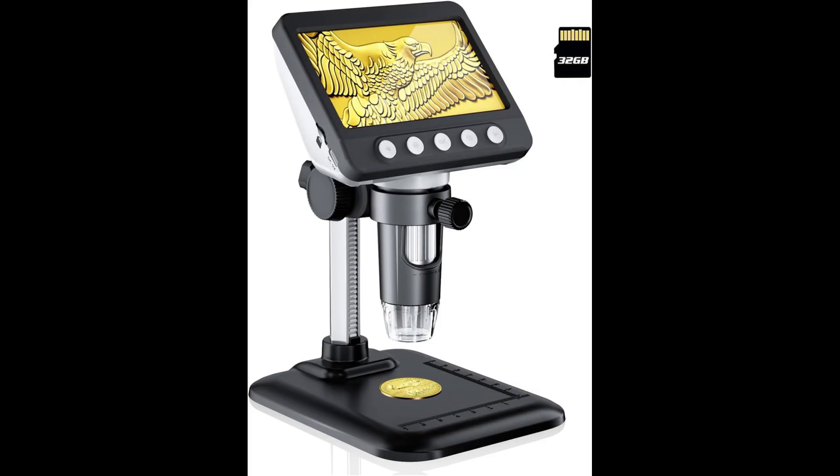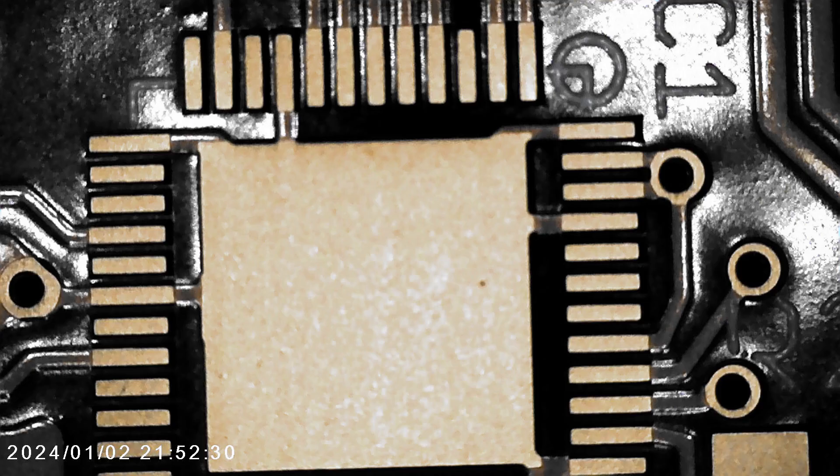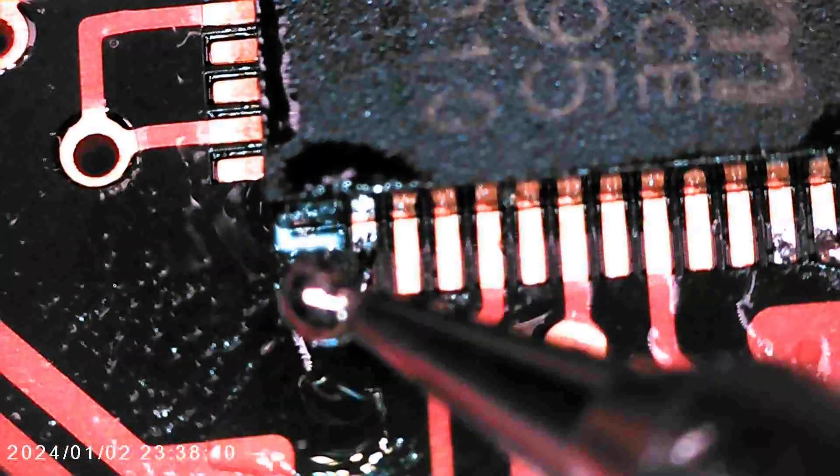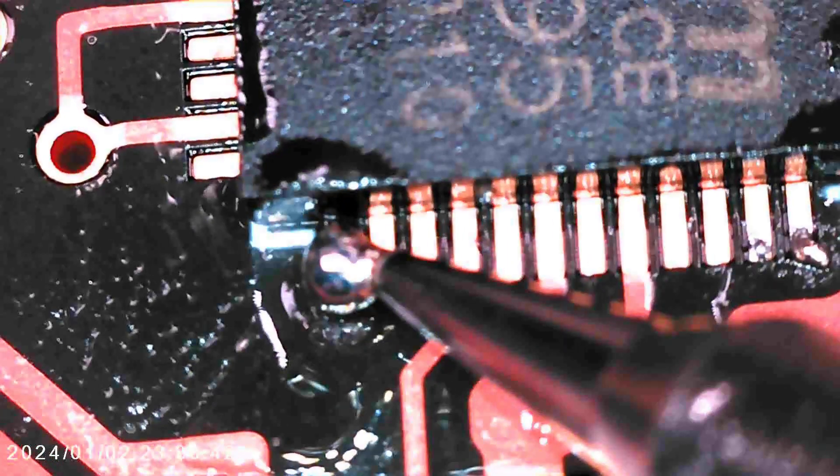Also, to make it easier to film up close, I got one of those cheap HD microscopes that can record to an SD card. And, well, you get what you pay for. Still, images aren't bad. Video leaves a lot to be desired. But it's still better than trying to film through the eyepiece of a monocular microscope.